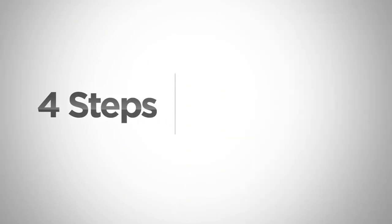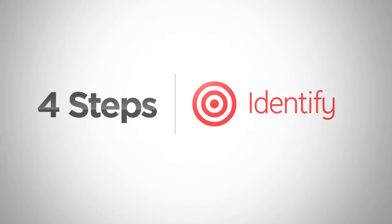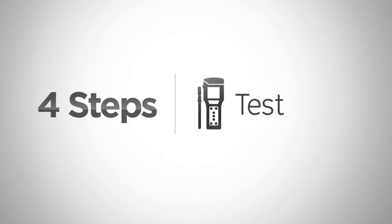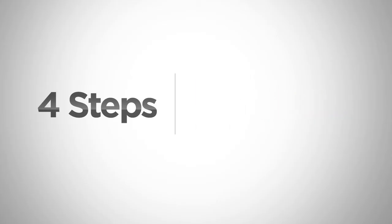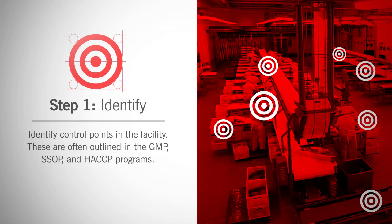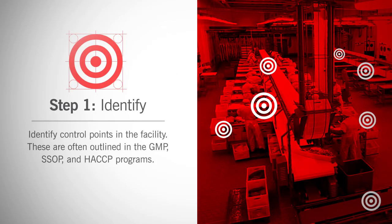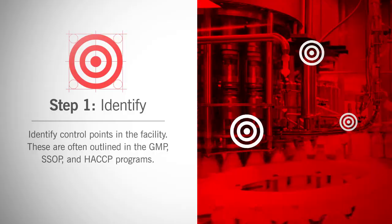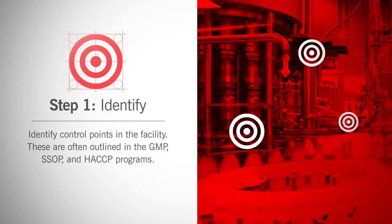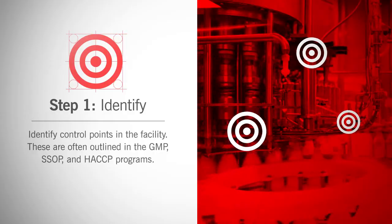To determine custom RLU limits for your facility, complete this four-step process: identify, clean, test, and calculate. Step one: identify control points in the facility. These are often outlined in the GMP, SSOP, or HACCP programs.